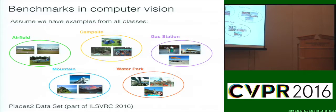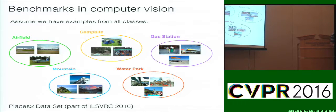I'm showing a subset of the ImageNet challenge known as Places 2, which is just groupings of various places — airfield, campsite, gas station, water park, mountain. The idea is that at training time we assume we have examples from all these classes. We train our classifiers, and then we move to a test set which has the exact same categories, though of course different images.